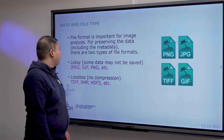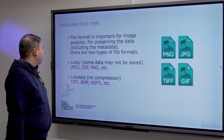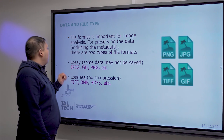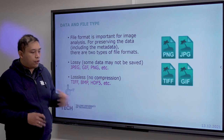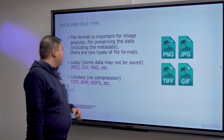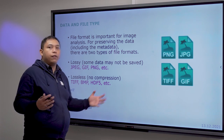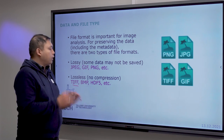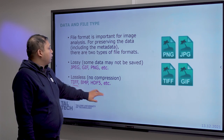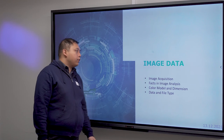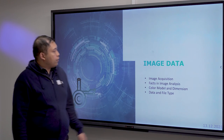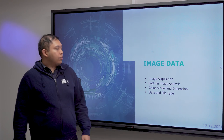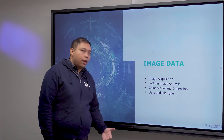Regarding file formats, there are two types: lossy and lossless. Lossy format saves your pixels and some data but not completely. Lossless contains everything including all the metadata. Usually we use TIFF because it's not too huge but still contains almost everything. That covers the first section on image data. You've learned about image acquisition, the fact that you should never trust your eyes, color models and dimensions you can add within your image data, and the data and file types.